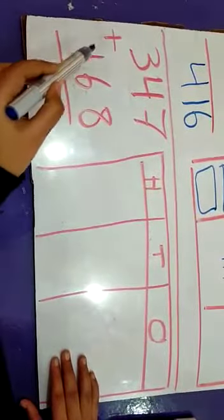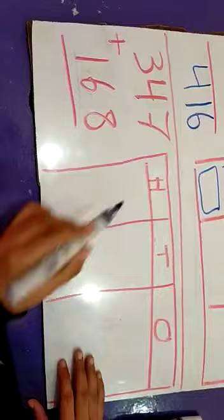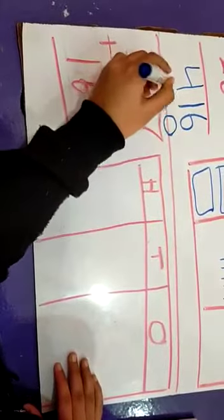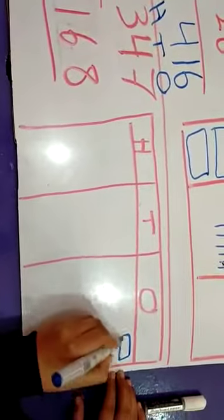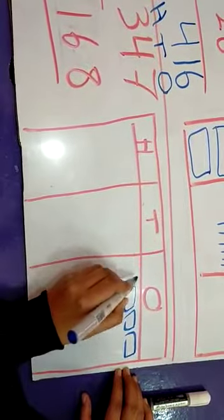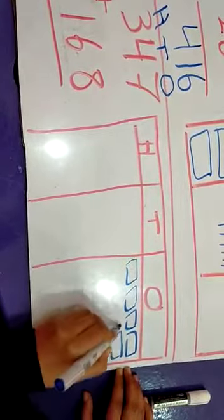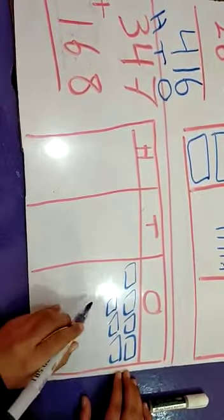347 plus 168. Adding in ones, in ones we have 7: 1, 2, 3, 4, 5, 6, 7. In tens,